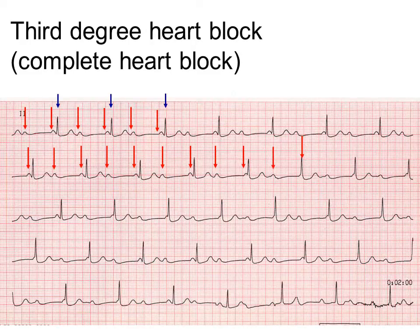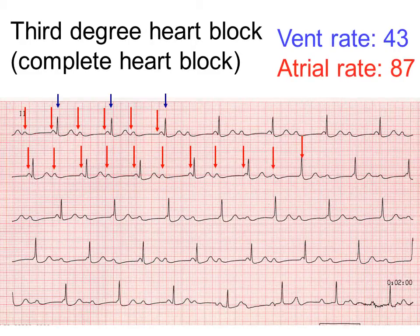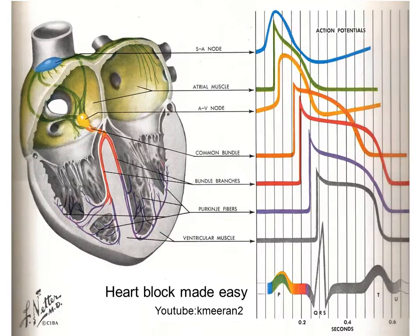The ventricular rate is about half of the atrial rate, but that's complete coincidence. The measured rates are 43 and 87, but there is a complete block. The atria are doing their own thing, running at 87 beats per minute, and the ventricles are doing their own thing from a lower pacemaker, running at about 43 beats per minute.